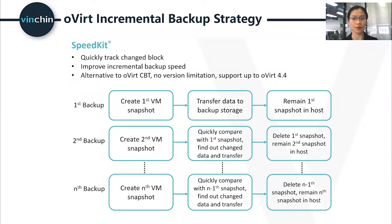To improve incremental backup speed for oVirt, we self-developed a new function called SpeedKit to quickly track changed data during incremental backup. After performing a backup job, the backup server tells the oVirt engine to keep the snapshot in the production VM. When the next backup job runs, the oVirt engine creates a new snapshot, and the backup server quickly compares the new snapshot with the previous one via oVirt REST API to find changed data and transfer it to backup storage. Then it deletes the last snapshot and keeps the new one. If your production environment generates a lot of new data daily and production storage has sufficient space, you can enable this feature to increase incremental backup speed.